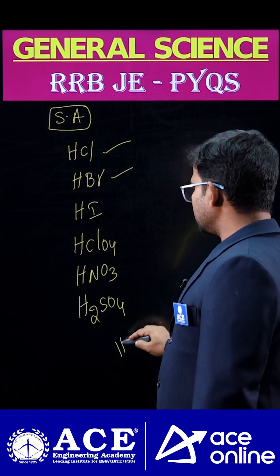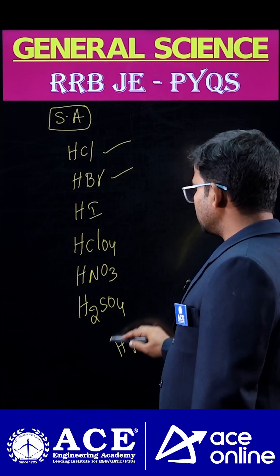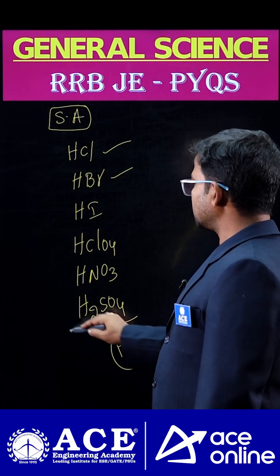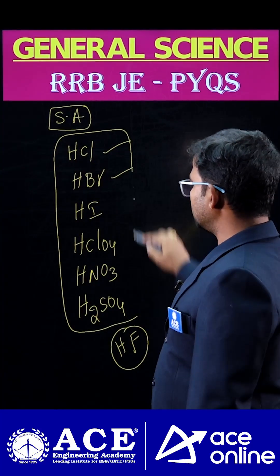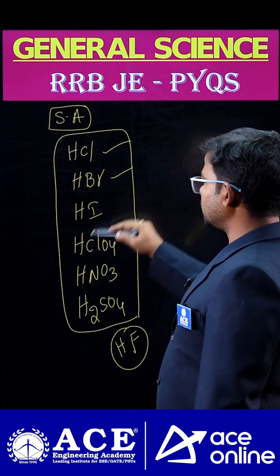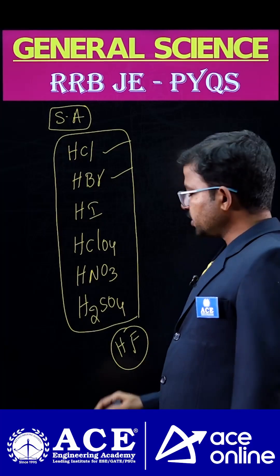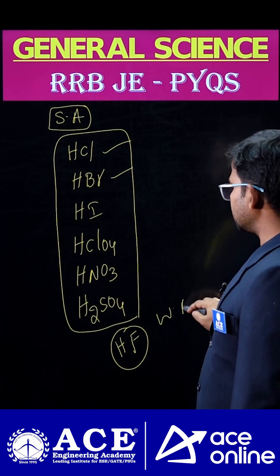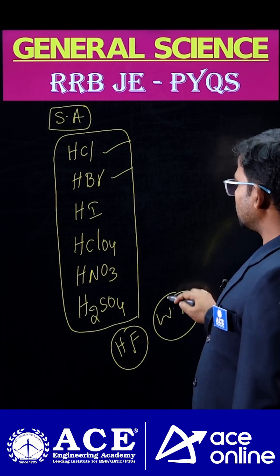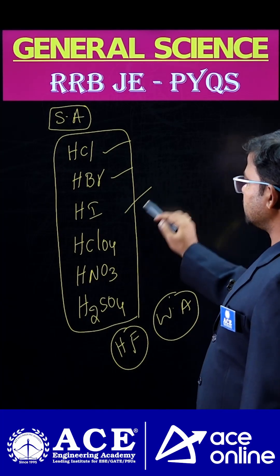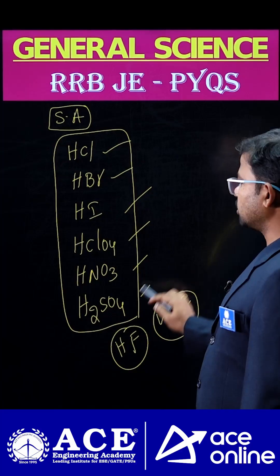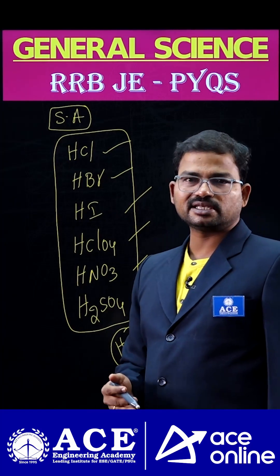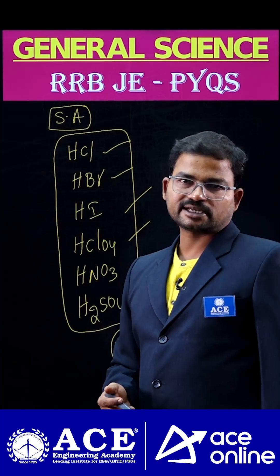Suppose they mention HF — does it exist in this given list? No, it does not exist in the given table. That is why HF is treated as a weak acid. So if you memorize these six chemicals, based on that, at a lower level you can easily get the answer.